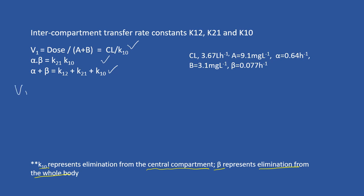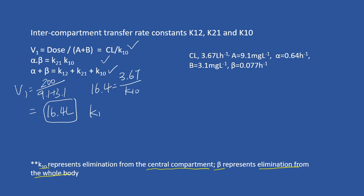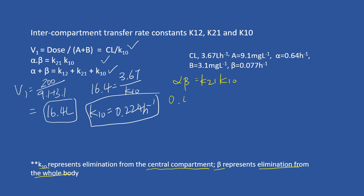Let's start by calculating V1. V1 equals the dose 200 divided by (A + B), which is 9.1 plus 3.1, giving a volume of 16.4 liters. To continue, 16.4 equals clearance 3.67 divided by k10, so k10 will be 0.224. Next, to calculate k21: alpha times beta equals k21 times k10. So 0.64 times 0.077 equals k21 times 0.224, giving k21 equal to 0.22.